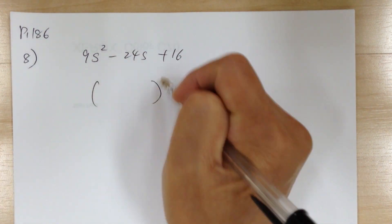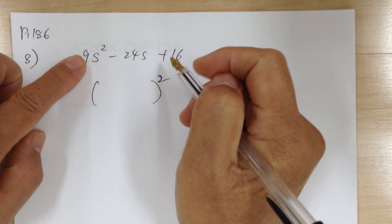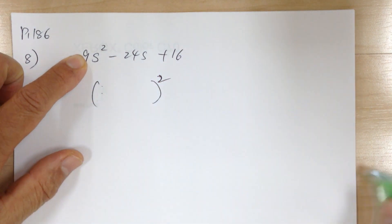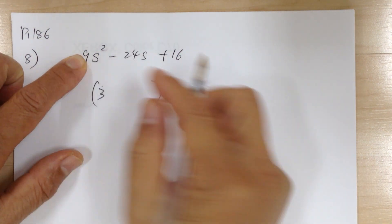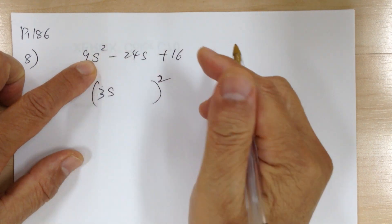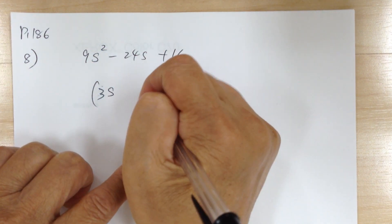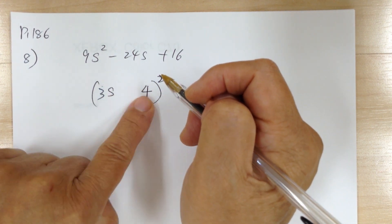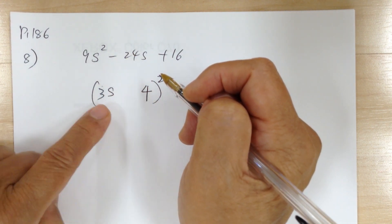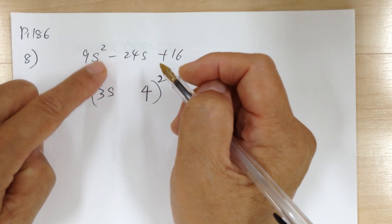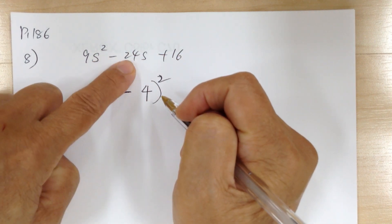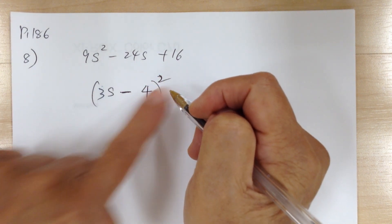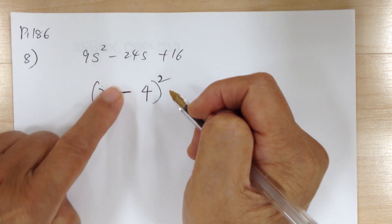All this is just guessing, so you have to try to match the middle to check if your guess is correct. To get minus 24, I need a minus sign. Then 2 × 4 × 3 = 24. So 9s² - 24s + 16 = (3s - 4)². Multiply everything together to verify you get that.